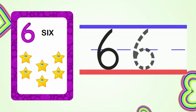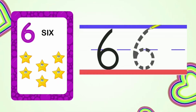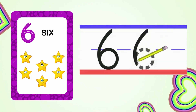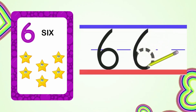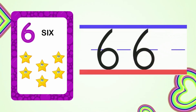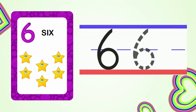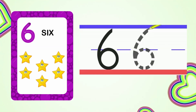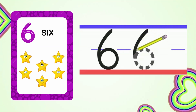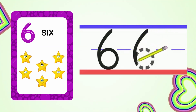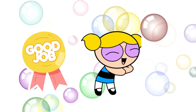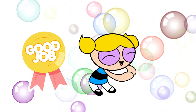Now let's learn to write number 6. To write number 6, we will start at the top and do a diagonal line down. Then we will curve around into a circle. Well done, my little champs.